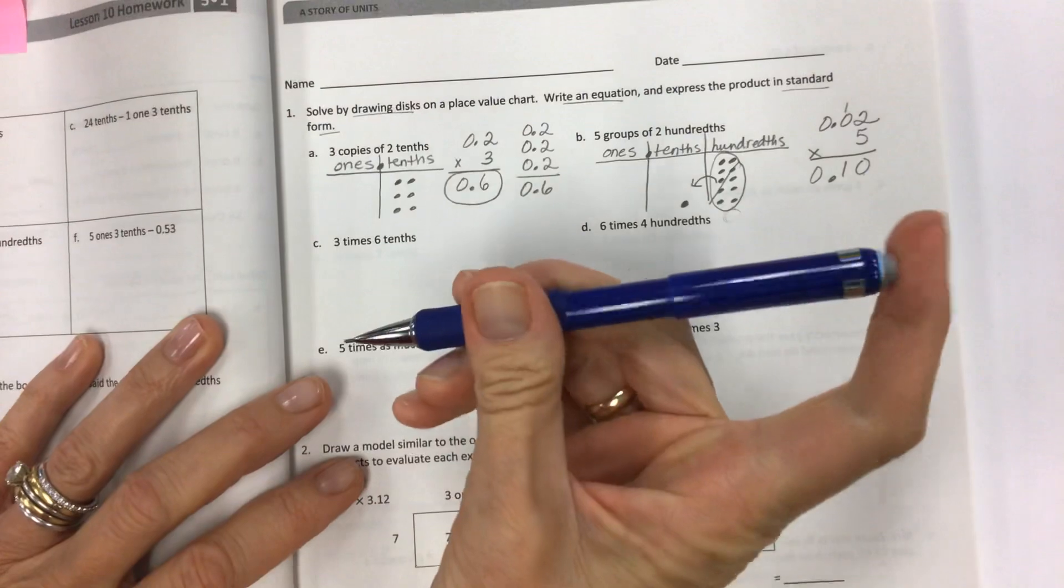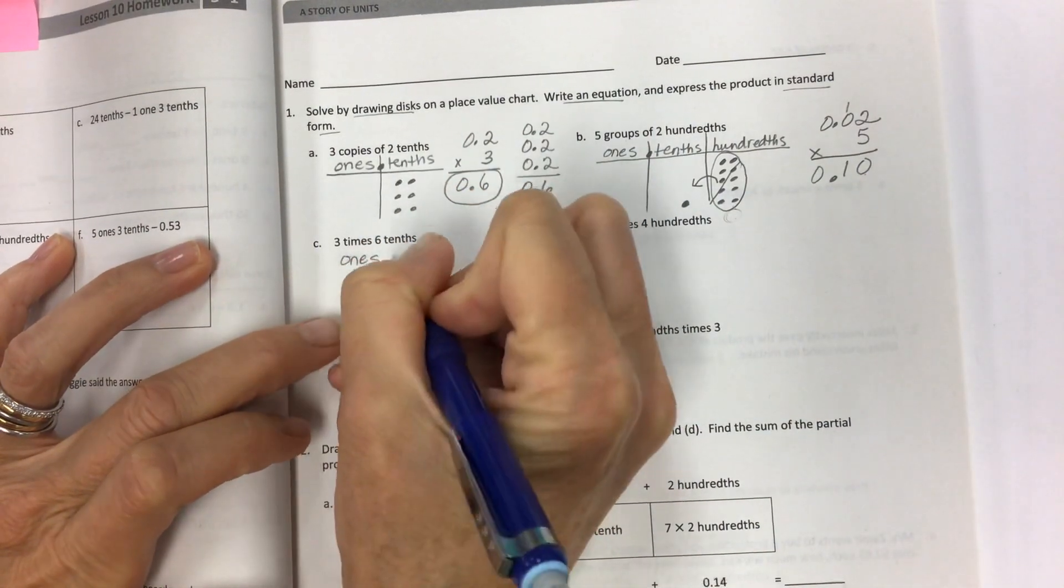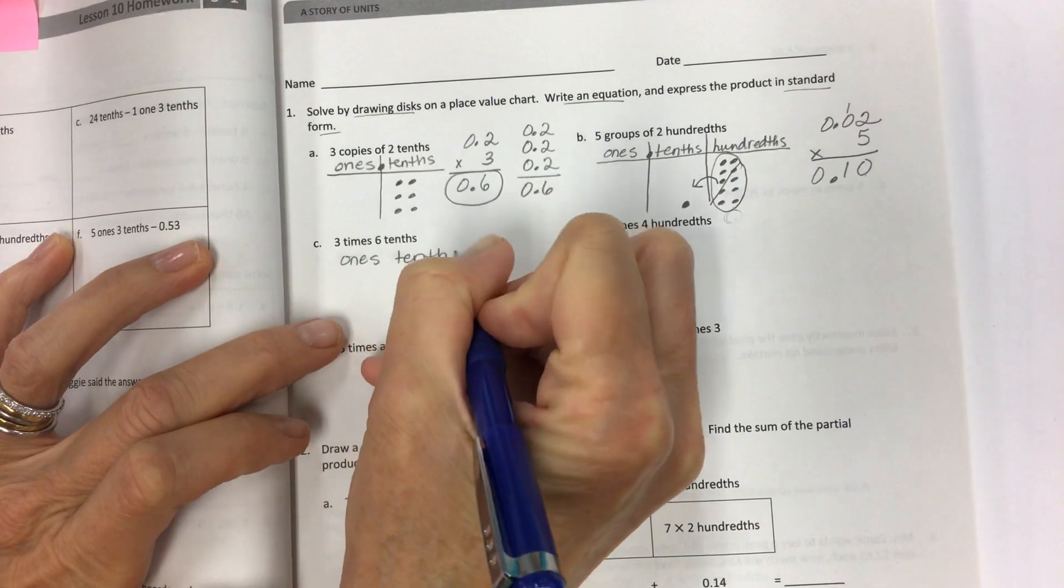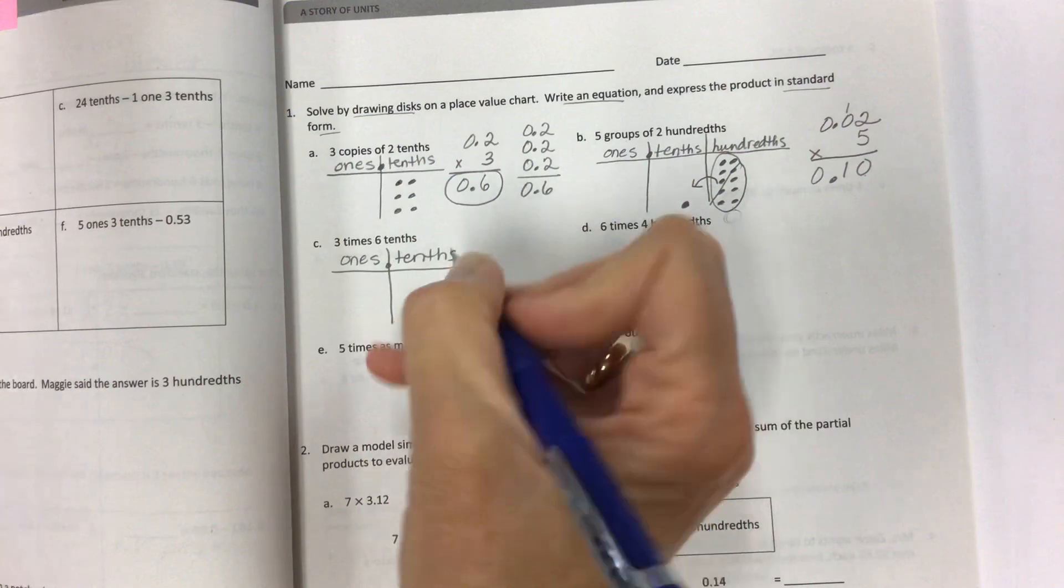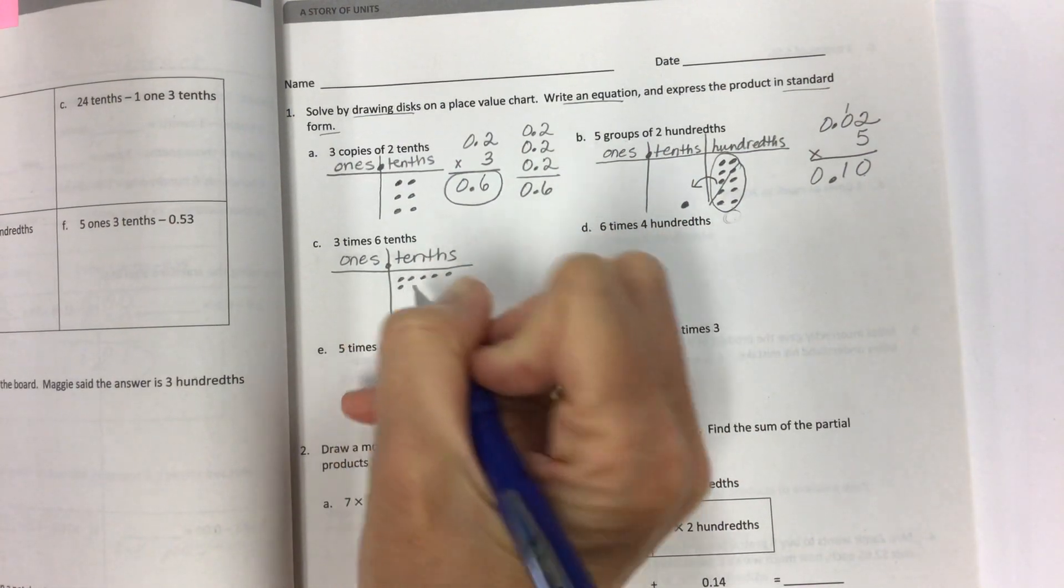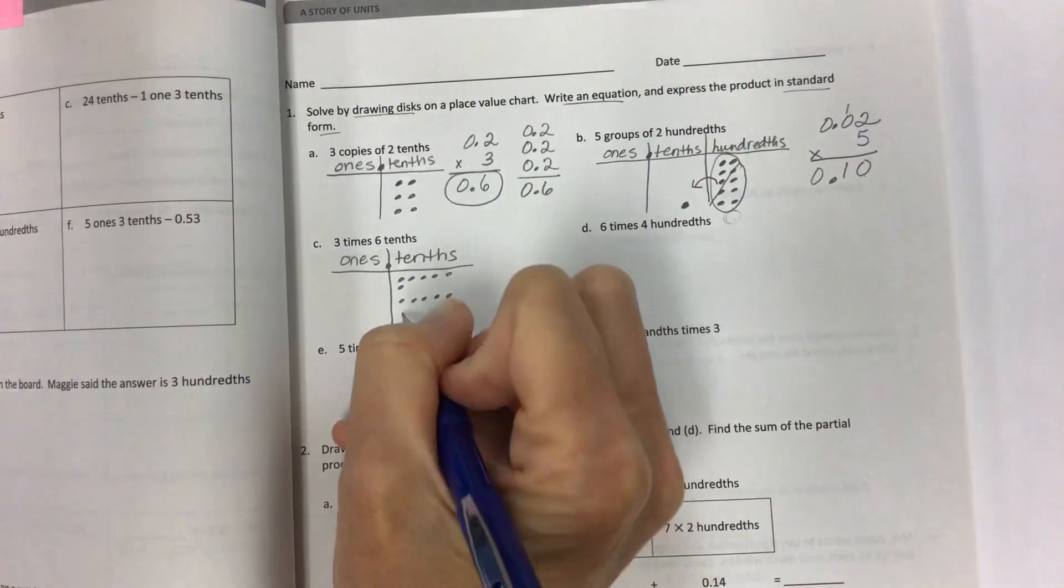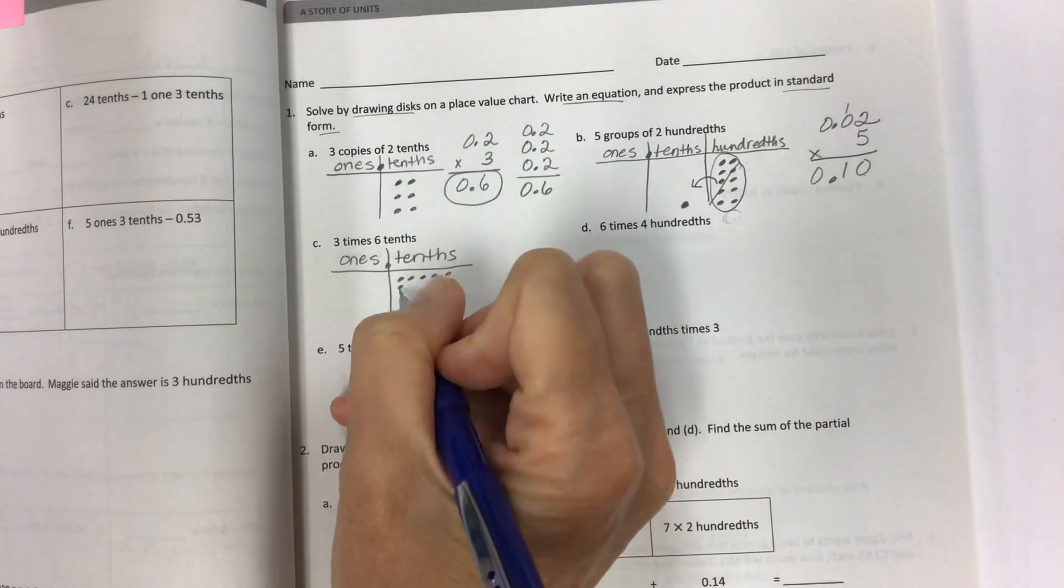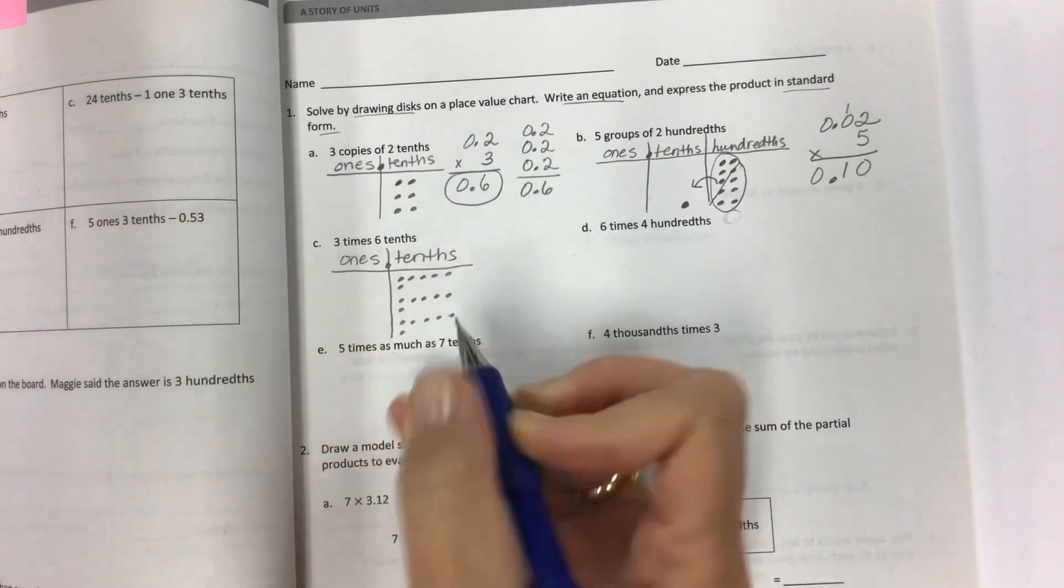Three times six tenths and we have ones and tenths. Make your little chart. Put your decimal in. And then six tenths. One, two, three, four, five, six. And remember we were talking about keeping them in a way that you can easily count. So five and one make six. Two, three, four, five, and one.